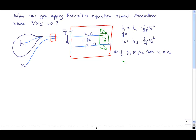So we can add in that if P01 is not equal to P02, then V1 is not equal to V2, and the fluid has vorticity.